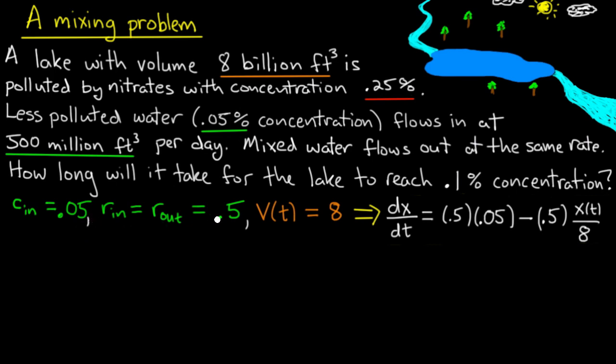Now R_in and R_out, those are given as 500 million cubic feet per day. And I will use the units of billion cubic feet per day, and so I write this as just 0.5. Now the volume is fixed, because the rate in and the rate out are the same. So the volume is simply V(t) equals 8, and I'm using billion cubic feet to be consistent with my rate units.